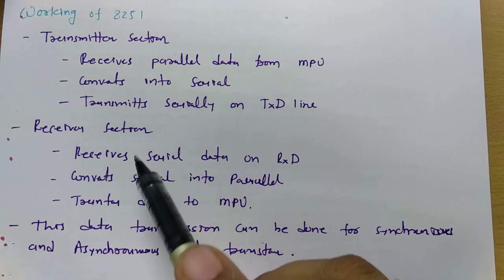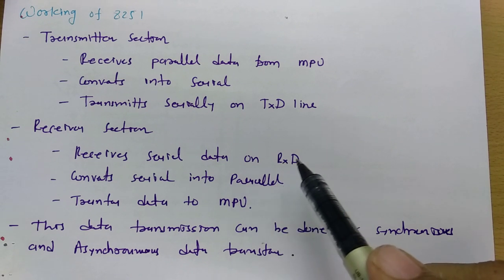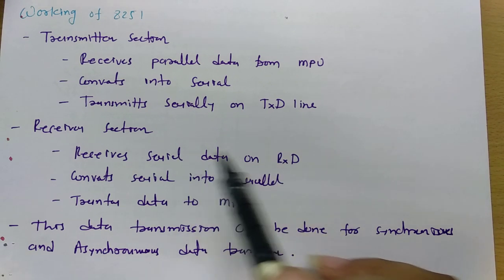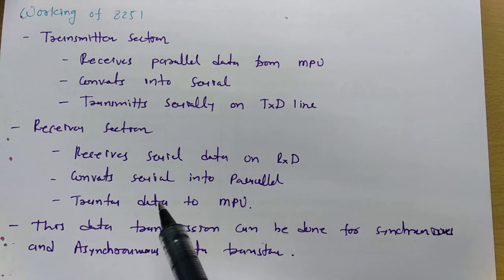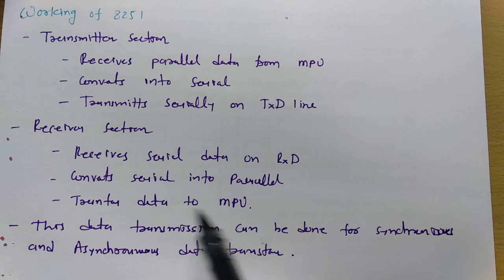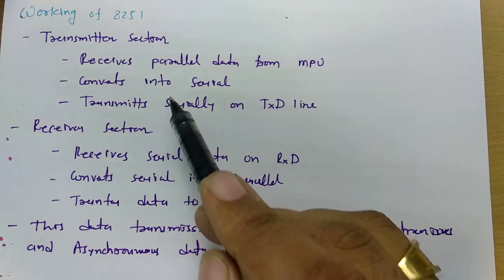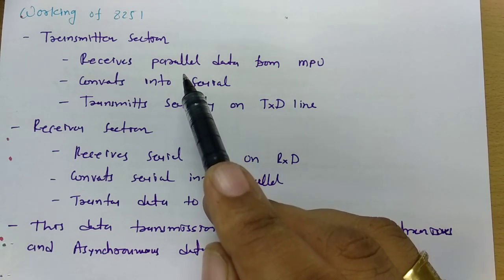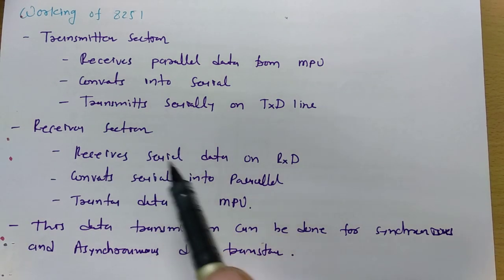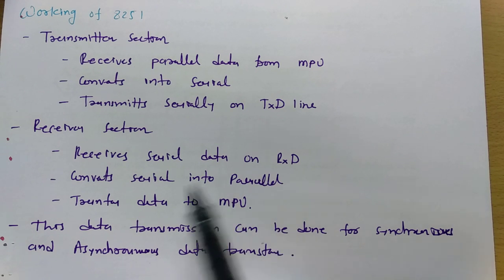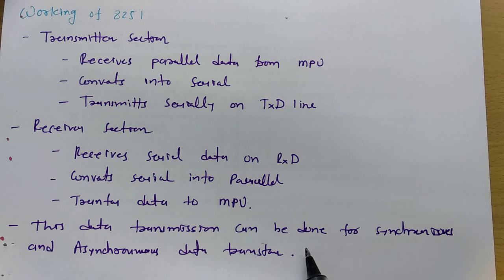For the receiver section, 8251 receives data from RxD serially; that serial data is then converted into parallel, and that parallel data is given to the microprocessor. This data transmission can be done for both synchronous and asynchronous data transfer using 8251 IC.